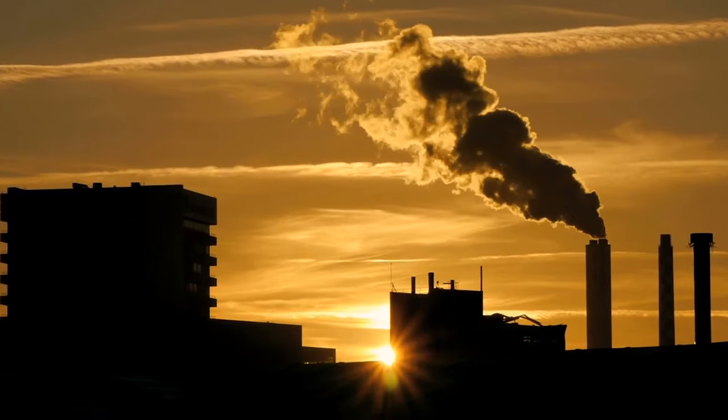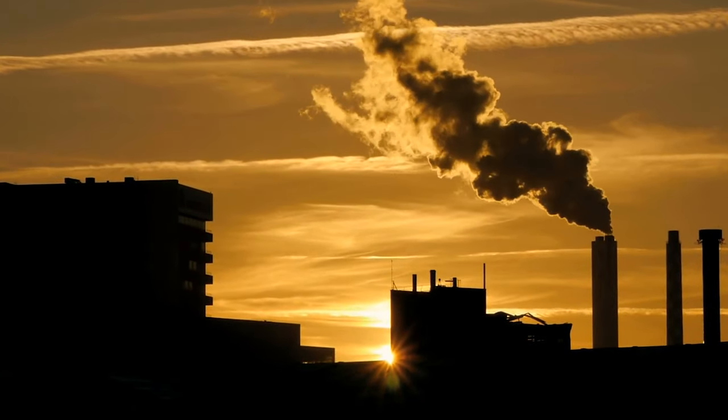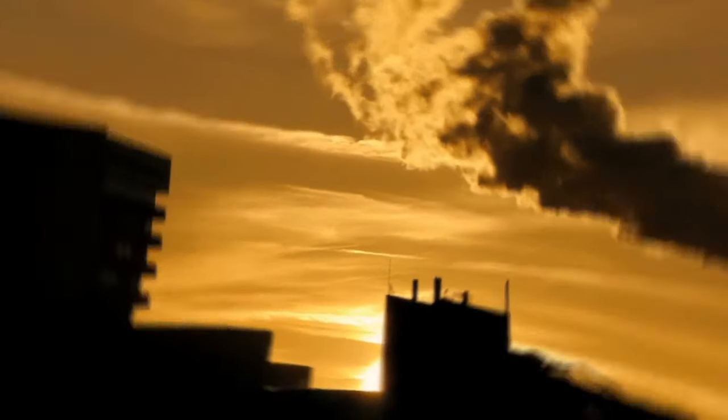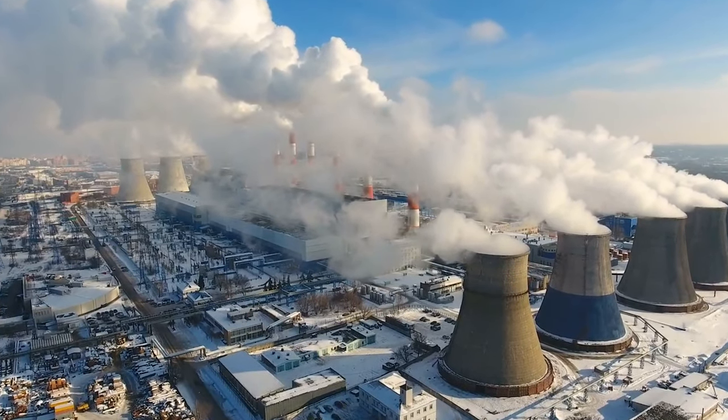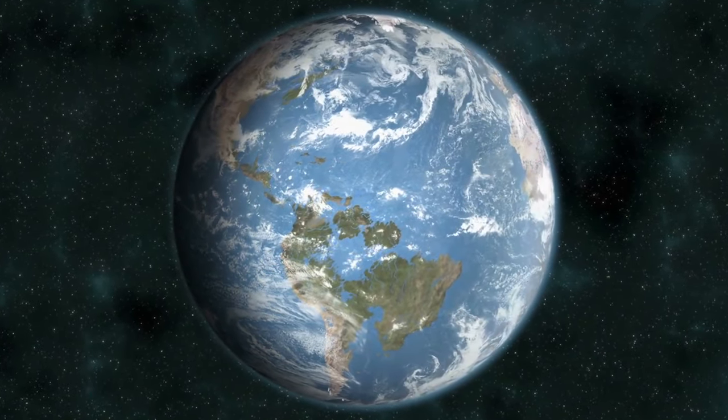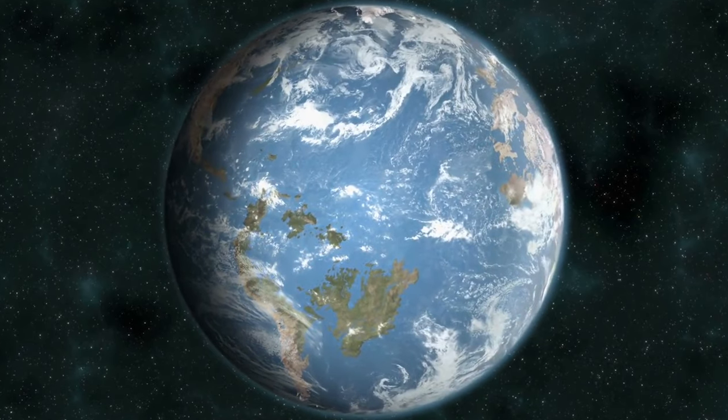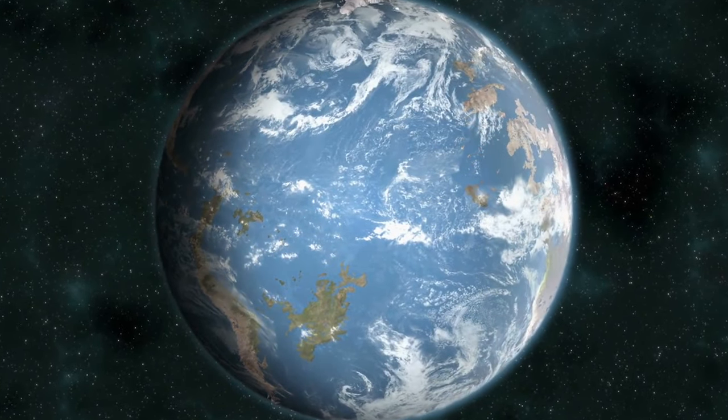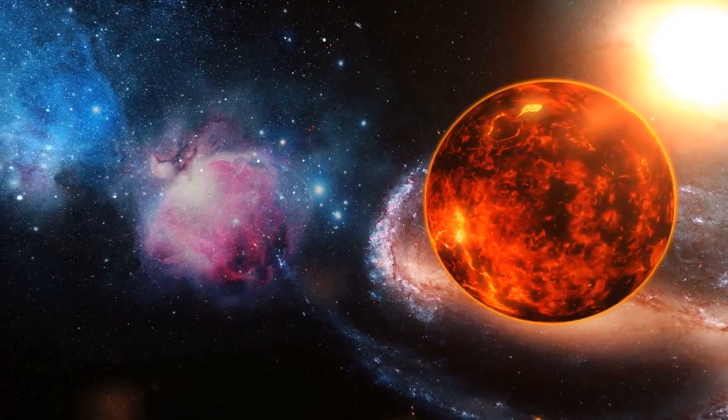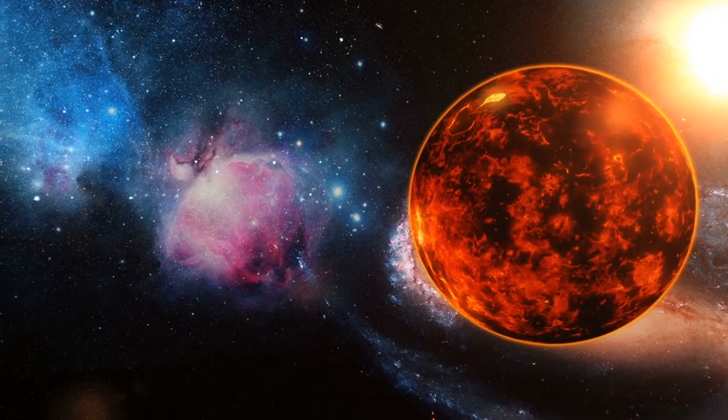However, climate change isn't the only thing that might affect Earth becoming like Venus. As the sun becomes 10 percent hotter around 1 billion years from now, the surface temperature of Earth will reach 47 degrees Celsius, prompting the temperature to increase rapidly and its oceans to boil away until it becomes a greenhouse planet.